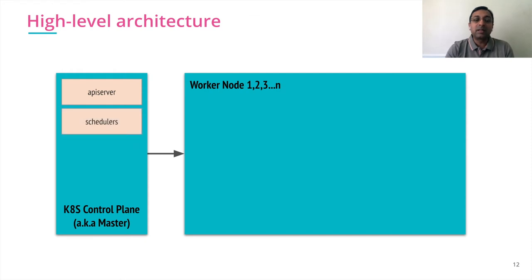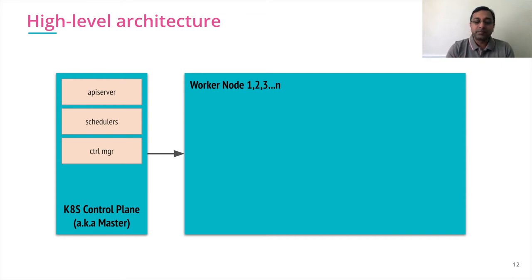The first component is the API server — it is the face of the Kubernetes master. Every communication happens via the API server. The second component is the scheduler, whose job is to schedule workloads to specific worker nodes. The control manager looks at the desired state versus the actual state and acts accordingly. The last component in the control plane is etcd, a distributed key-value database and the only stateful component in the whole Kubernetes architecture.